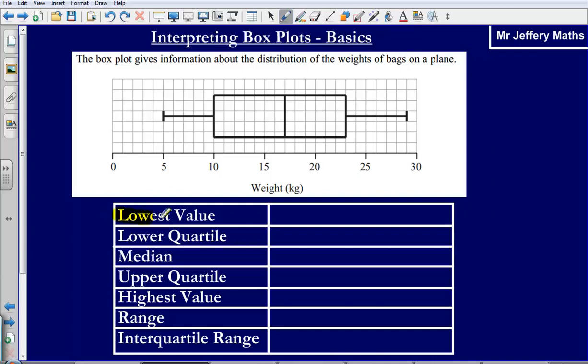So the lowest value, this part here, that is being represented by the end of the whisker that is coming out of the box. Sometimes these are called box and whisker diagrams. So that's being represented by the whisker that is coming out of the box.